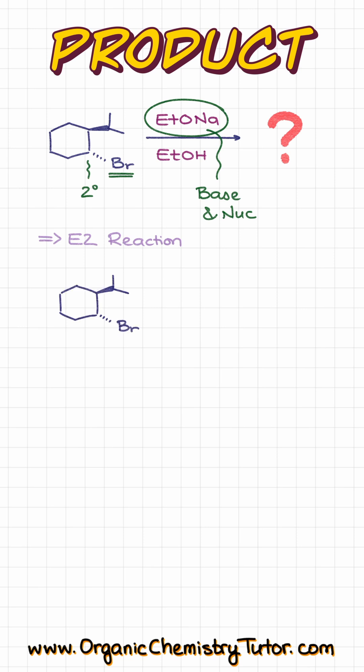Since this is an E2 reaction, I'm going to look at the available protons in the beta position to my leaving group. I have a proton over here, which is going to be sitting on the dash, and I have a couple more protons on the bottom over there.